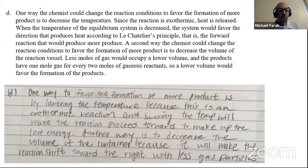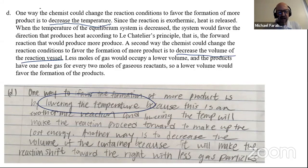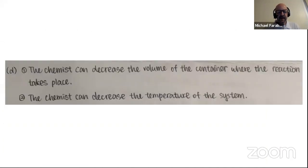Let's take a look at some good answers to this question. One that was typed: one way the chemist could change the reaction conditions to favor the formation of more product is to decrease the temperature. Since the reaction is exothermic, when the temperature is decreased, the system would favor the direction that produces heat according to Le Chatelier's principle — that is the forward reaction. A second way is to decrease the volume of the reaction vessel, talking about fewer moles of gas. Another person says lowering the temperature will cause the reaction to proceed toward the right, and another way is to decrease the volume because it would shift toward the right.